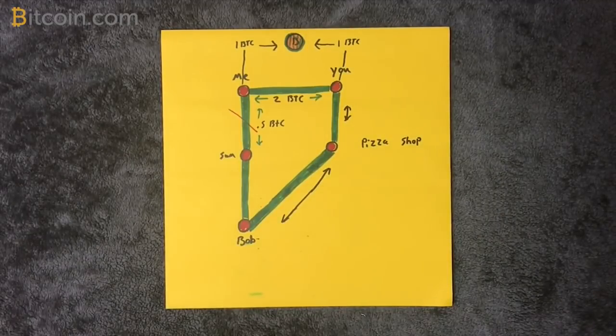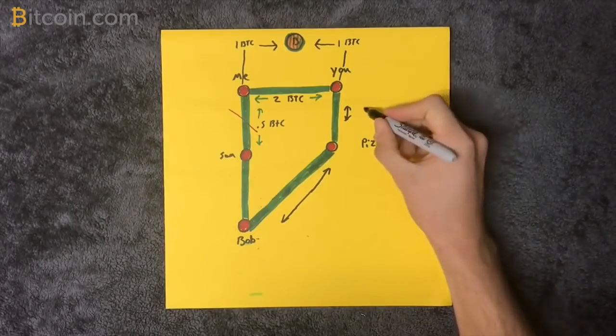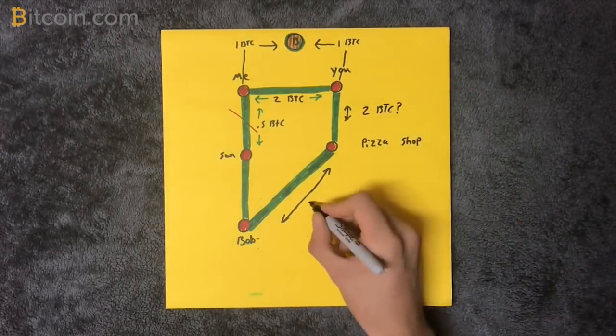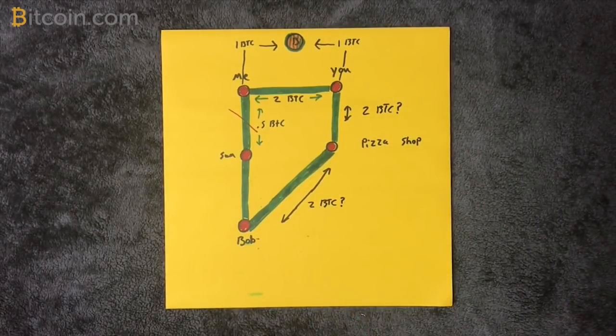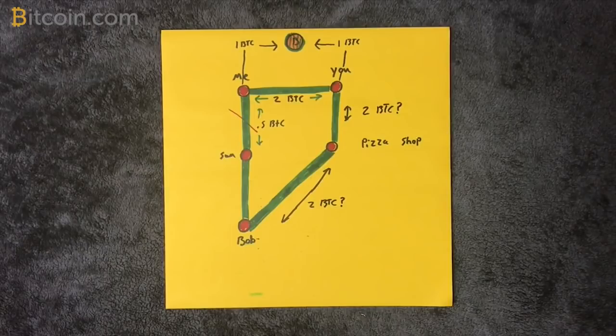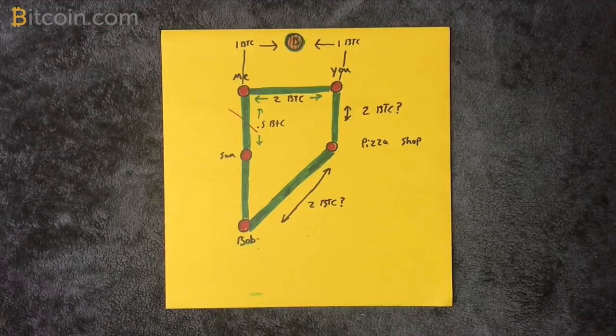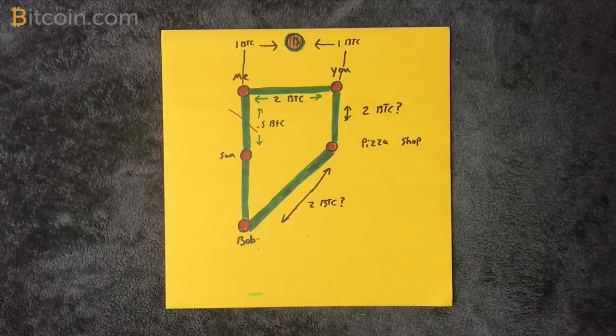Or so it would seem. A problem with the system is the requirement to preload every open channel you have ahead of time with what you assume will be the upper limit of your spending habits with that channel. It's more convenient to have one open channel with a large amount of Bitcoin to a well-connected party that consistently has more money than you so you can always route through.